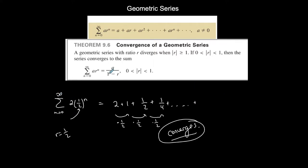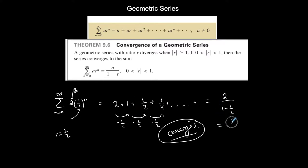If a geometric series converges, we can actually determine what it converges to using the formula a/(1−r). In this case, a=2 and r=1/2, so we get 2/(1−1/2) = 2/(1/2) = 2×2 = 4. This particular geometric series converges to 4.